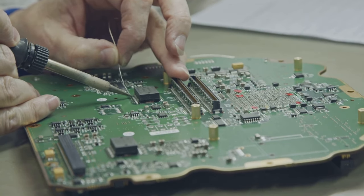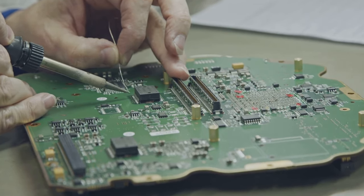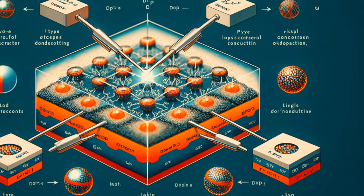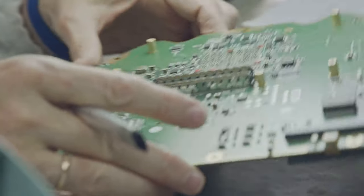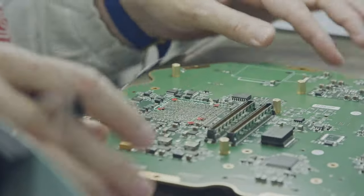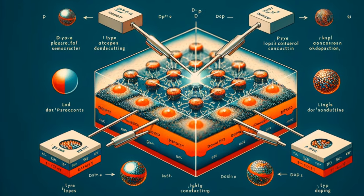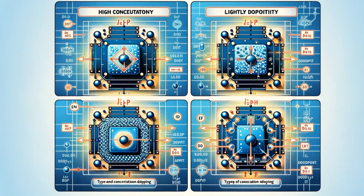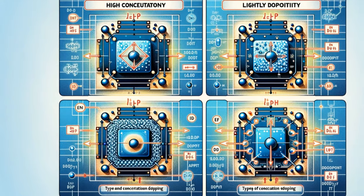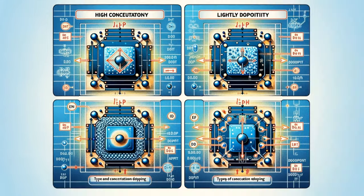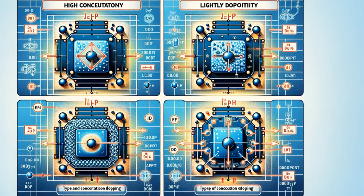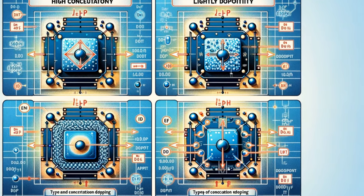Doping allows us to precisely control the conductivity of semiconductors. By carefully adjusting the type and concentration of dopants, we can create semiconductors with a wide range of electrical properties. For example, a heavily doped semiconductor will have a high conductivity, while a lightly doped semiconductor will have a low conductivity. This ability to fine-tune conductivity is essential for creating electronic devices with specific functions.